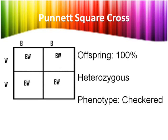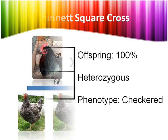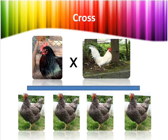The BW offspring, instead of being heterozygous dominant with a black phenotype, has a checkered phenotype. Therefore, in this cross, WW is a recessive white chicken, BB is a dominant black chicken, and BW is a heterozygous checkered chicken.